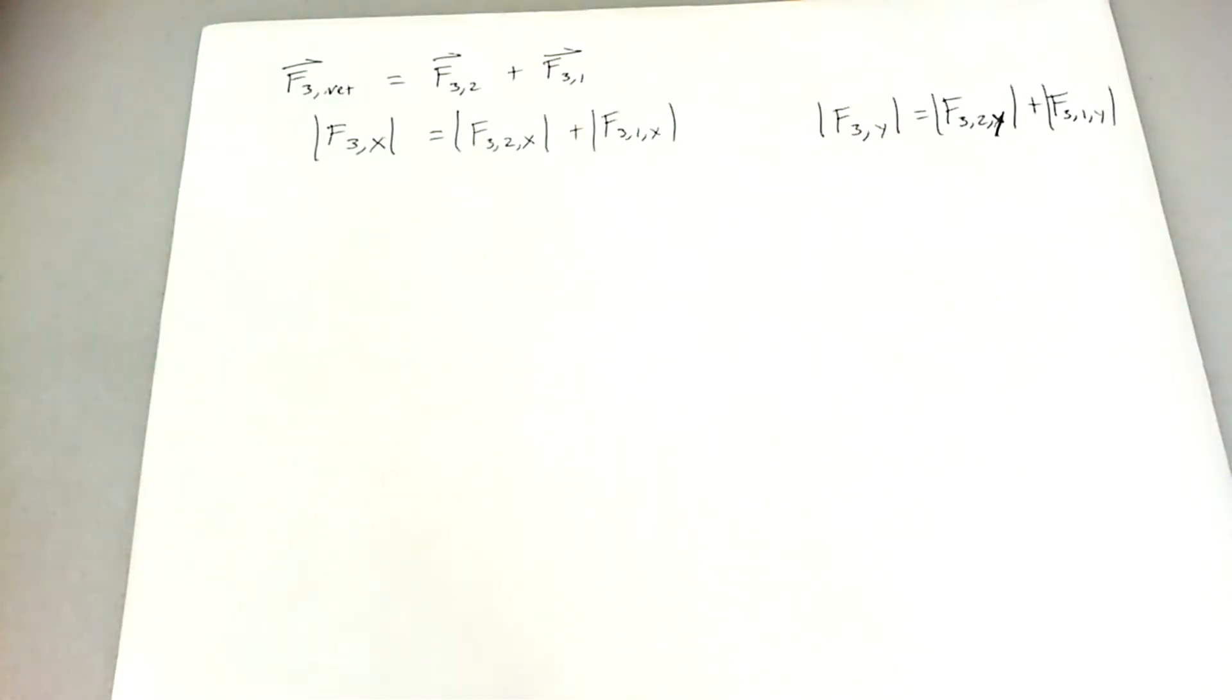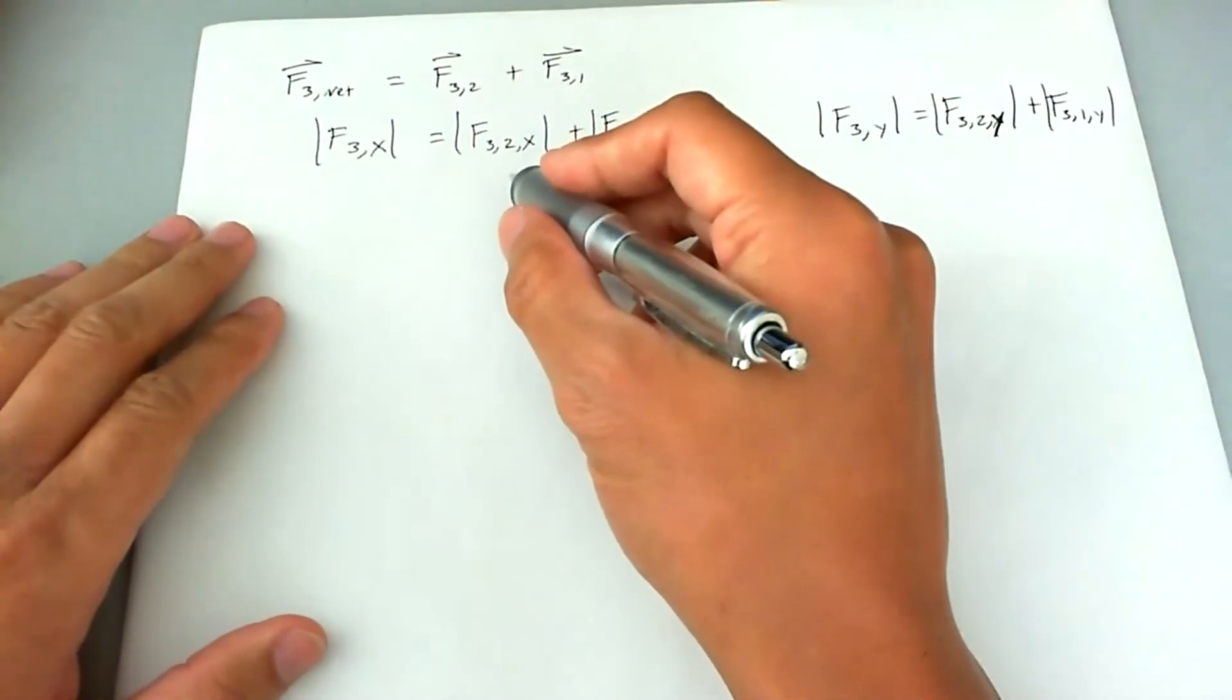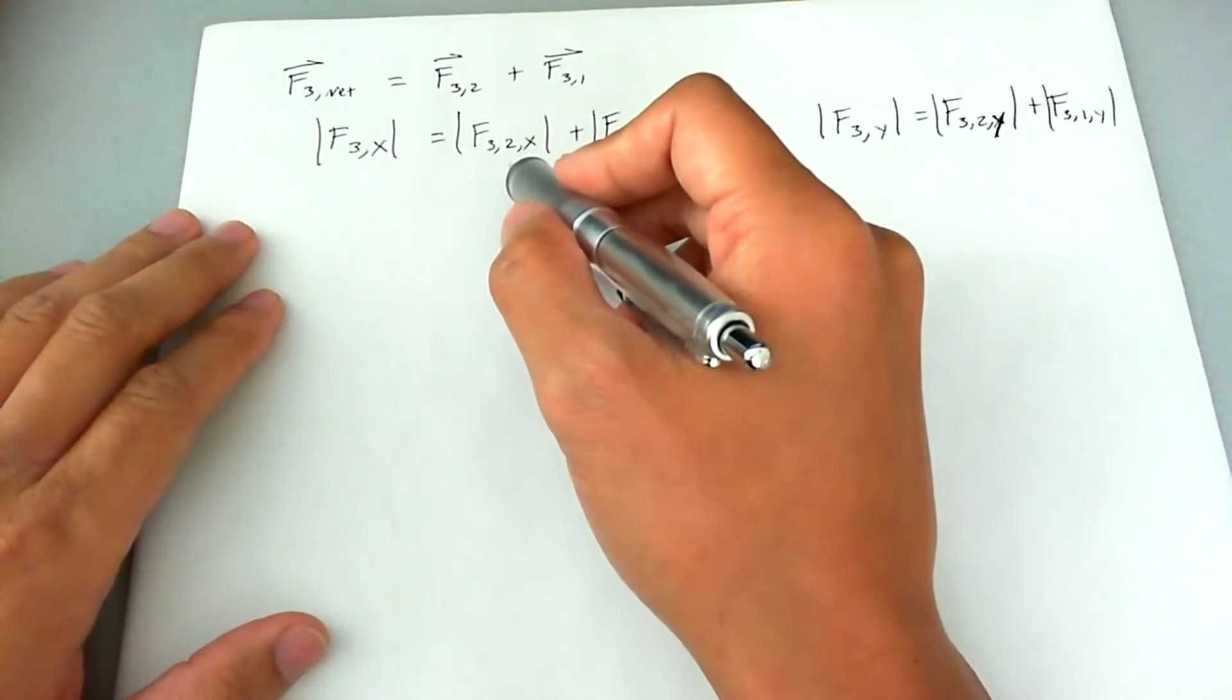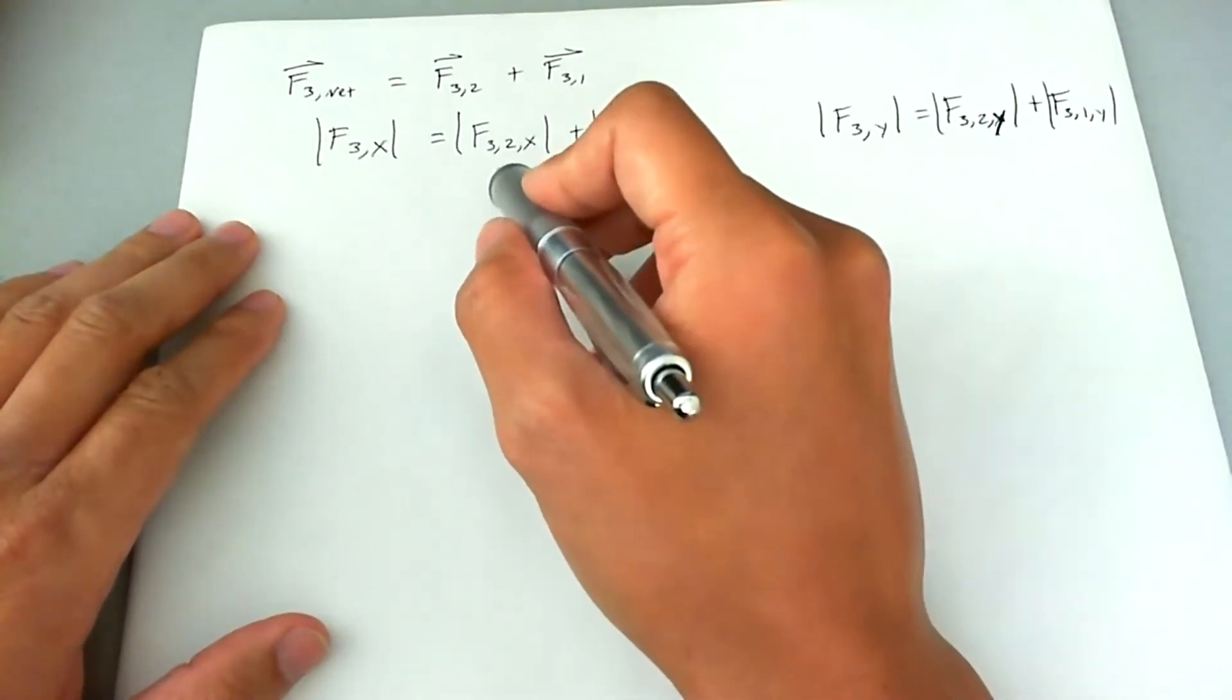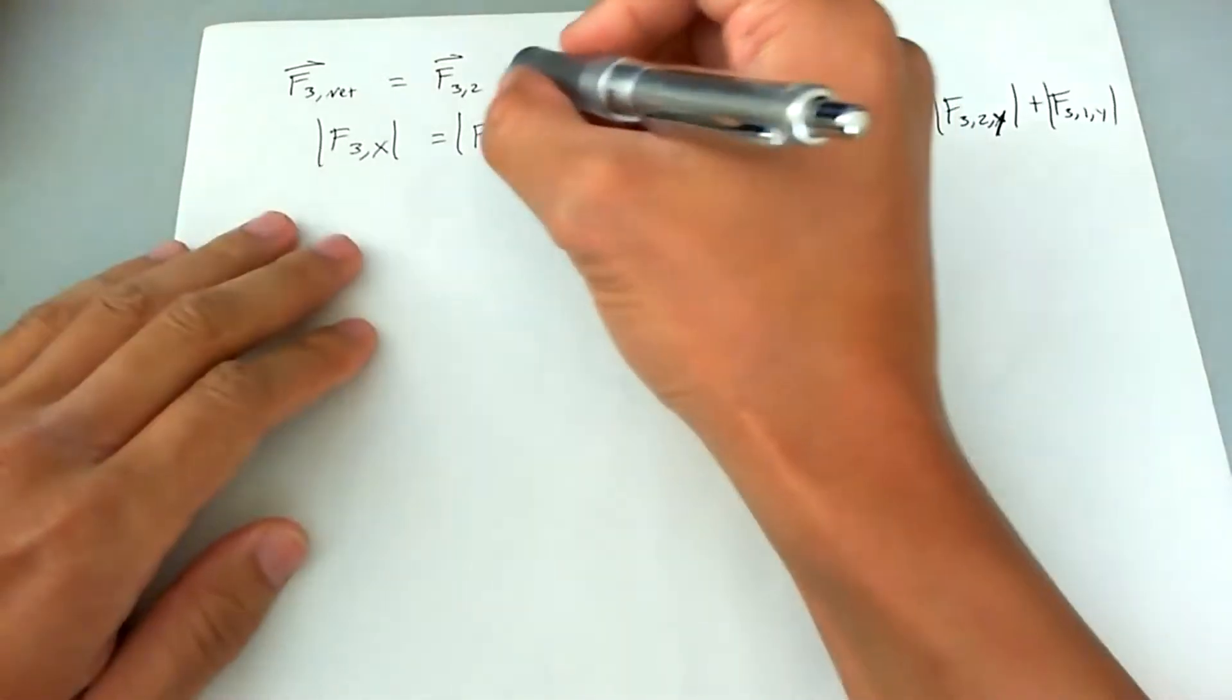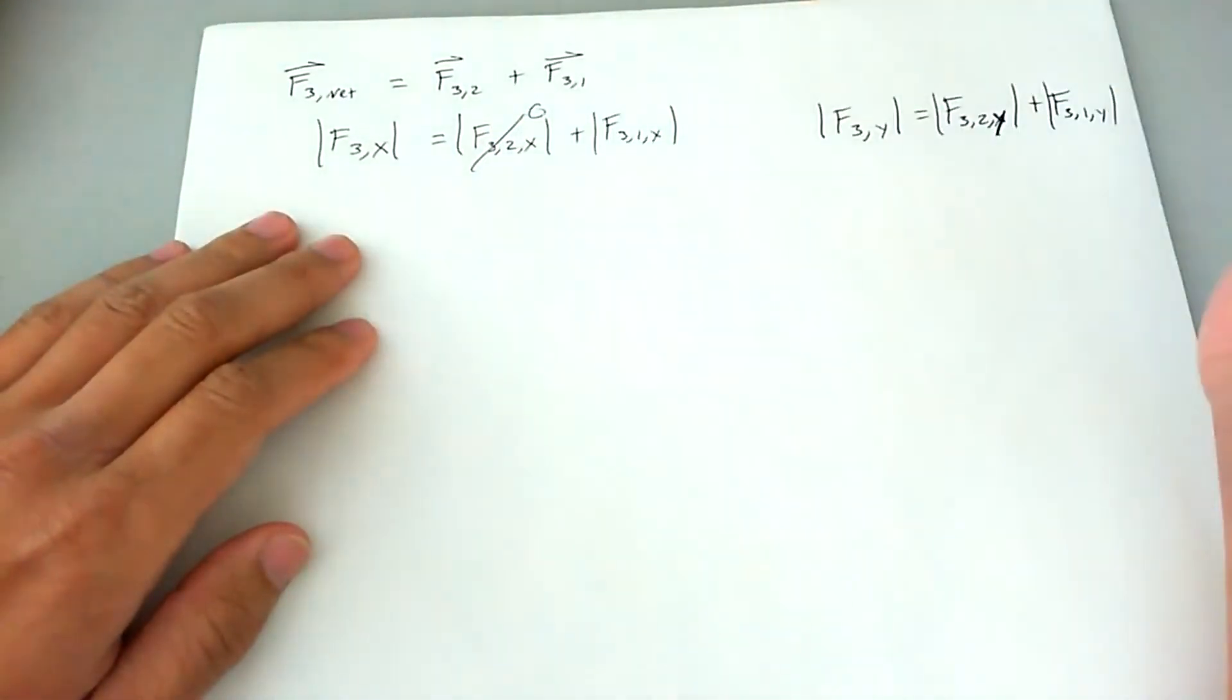Right off the bat, you can see that the second charge is not contributing to the x direction of the force acting on charge three, since charge two is directly beneath charge three. So it has no x component of the force and we will cross it off, claiming that it is zero.